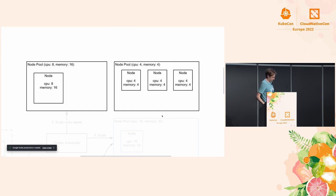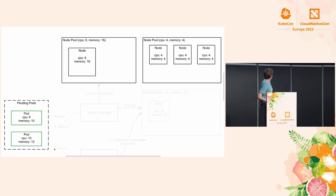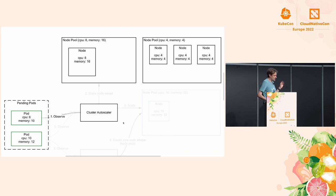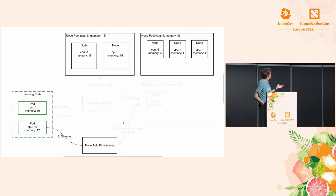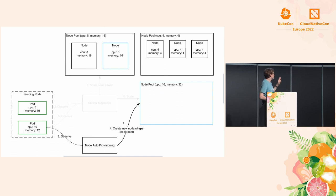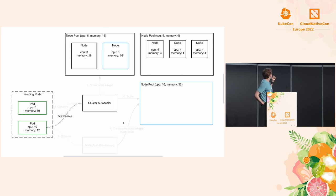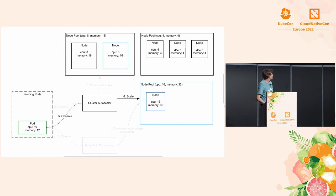If there's existing space on one of those nodes, the pod just gets placed. But what about when there isn't? If there are two pending pods — one that can fit on an existing node pool and one that can't — a component called the cluster autoscaler looks at existing node pools and extends one to add an extra node. For a pod that didn't fit in any existing node pool definition, a separate component called the node auto-provisioner creates a new node pool definition — say, 16 CPU, 32 gigabytes of memory — for that pod to fit.